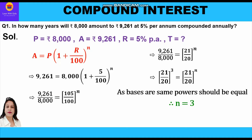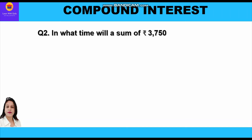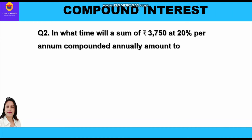So our answer is that the time period is equal to 3 years, in which the principal of rupees 8000 will become rupees 9261 at 5% rate of interest. Now let's take up the second question: In what time will a sum of rupees 3750 at 20% per annum compounded annually amount to rupees 6480?